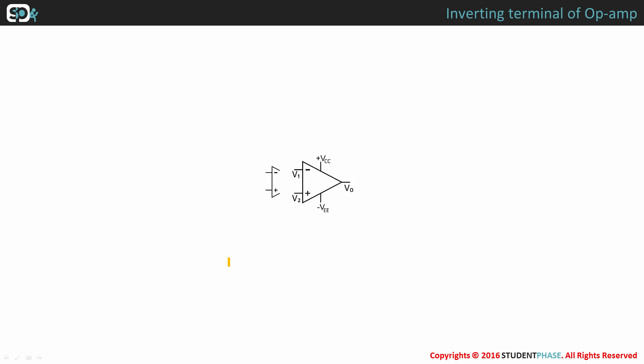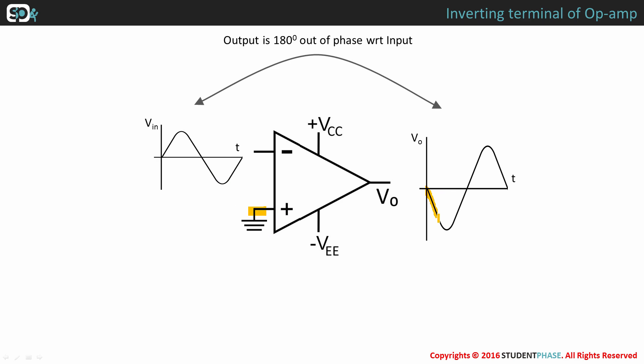When input signal is applied at the inverting terminal and the non-inverting terminal is grounded, the output of an op-amp is 180 degrees out of phase with respect to input.